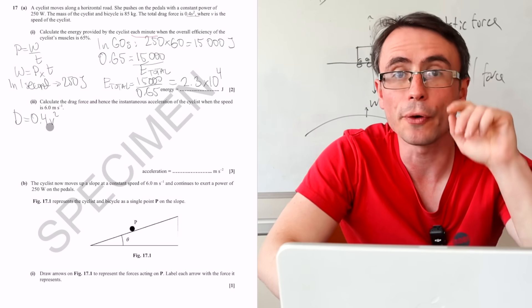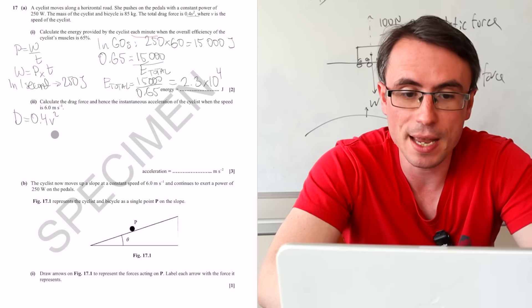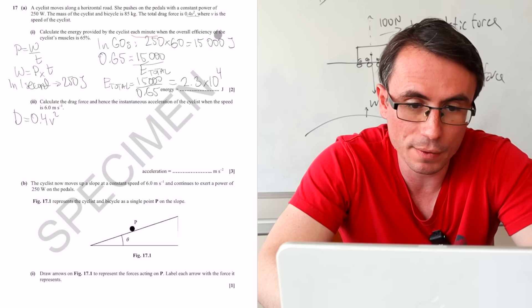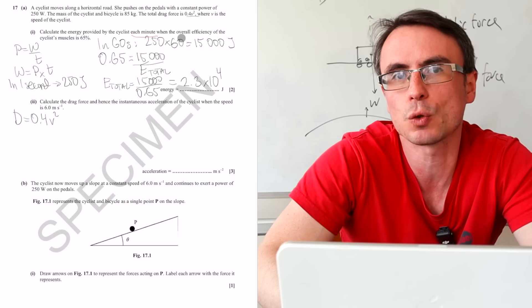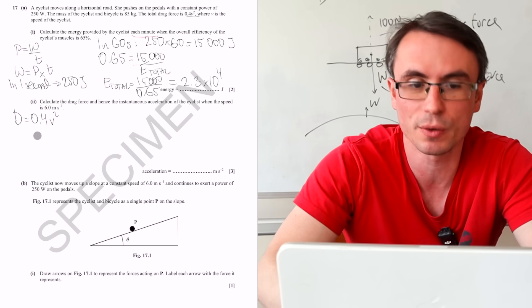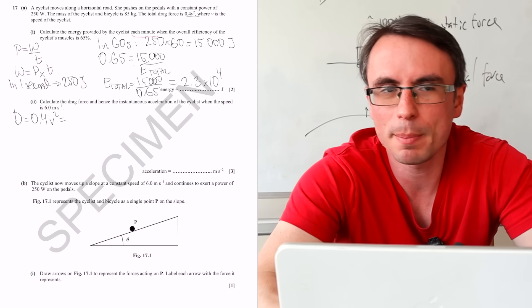Let's start off with the easy bit. We're going to calculate the drag force and we're given a formula here. So we can say that the drag force is just going to be 0.4V squared. Notice how I'm writing out the formula even if the equation is given over here because I'm far less likely to make a mistake if I just write out the formula.